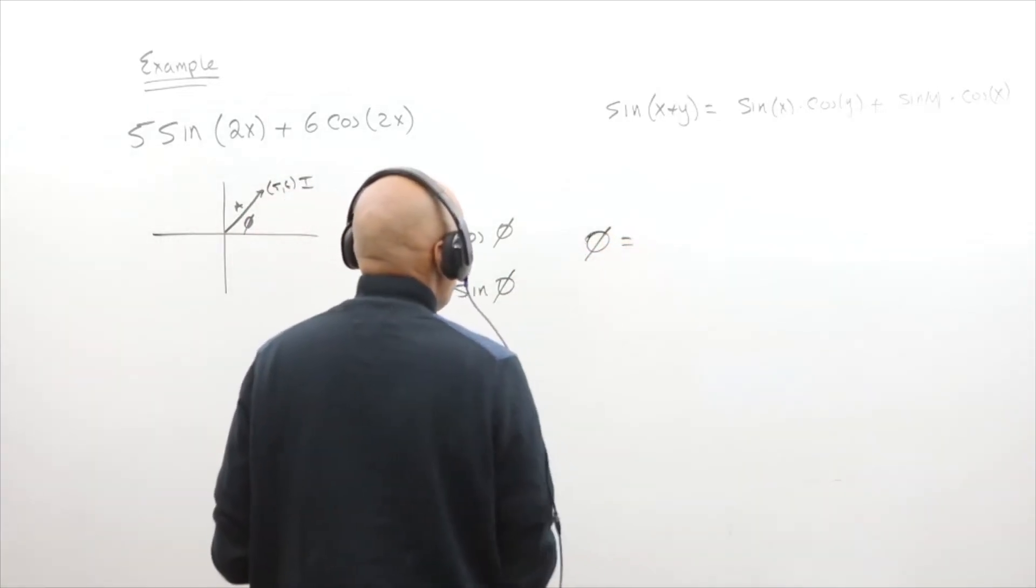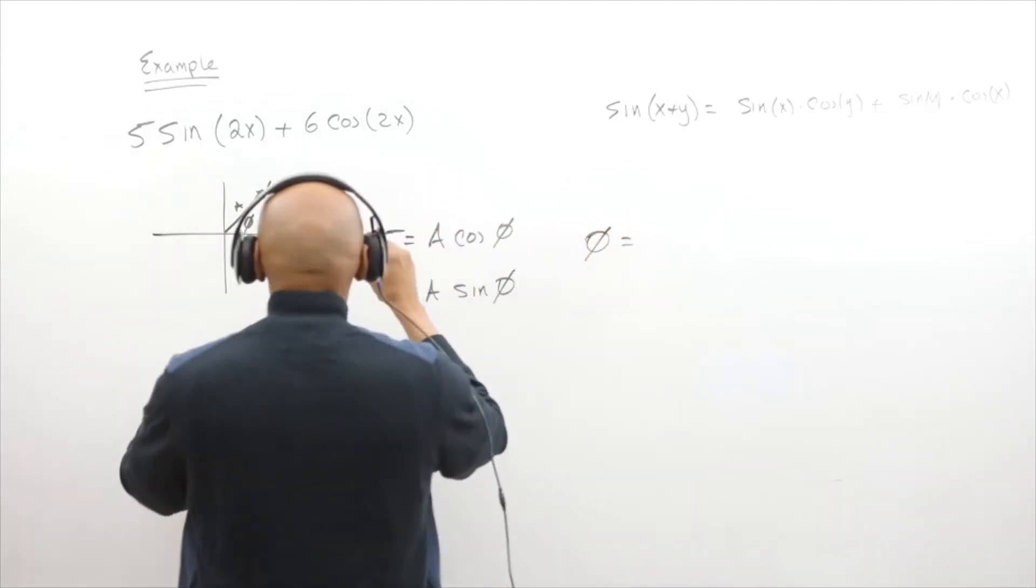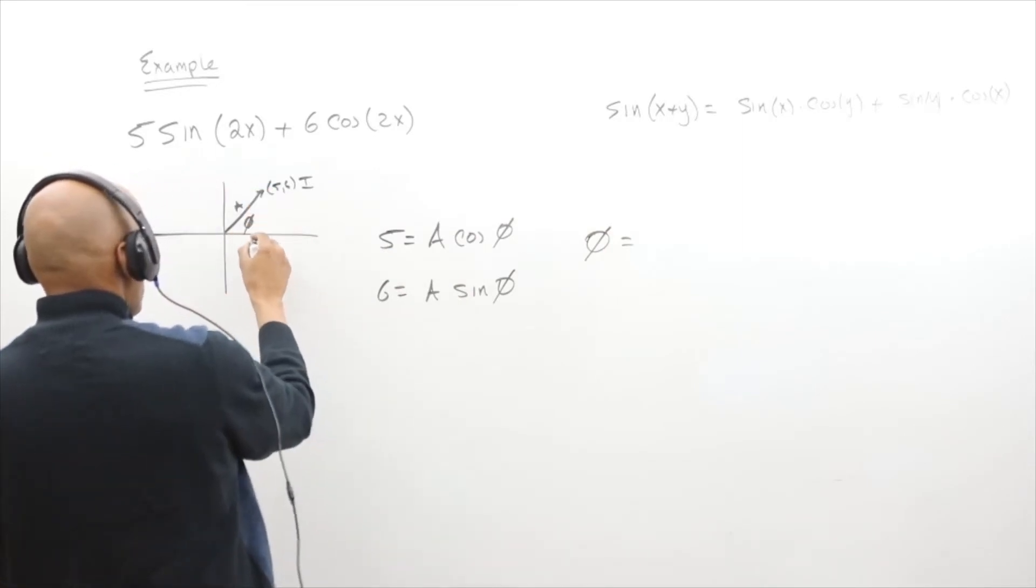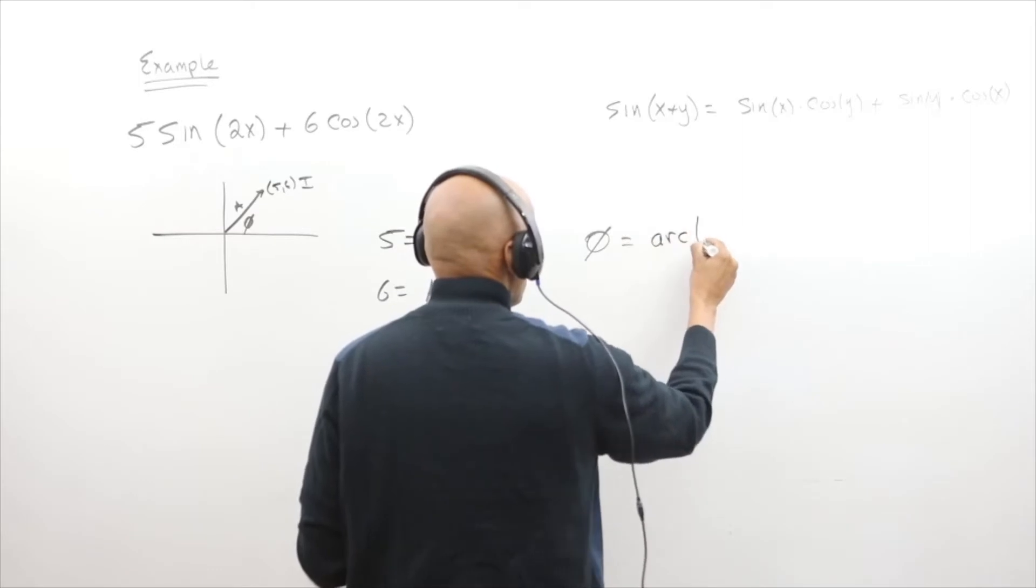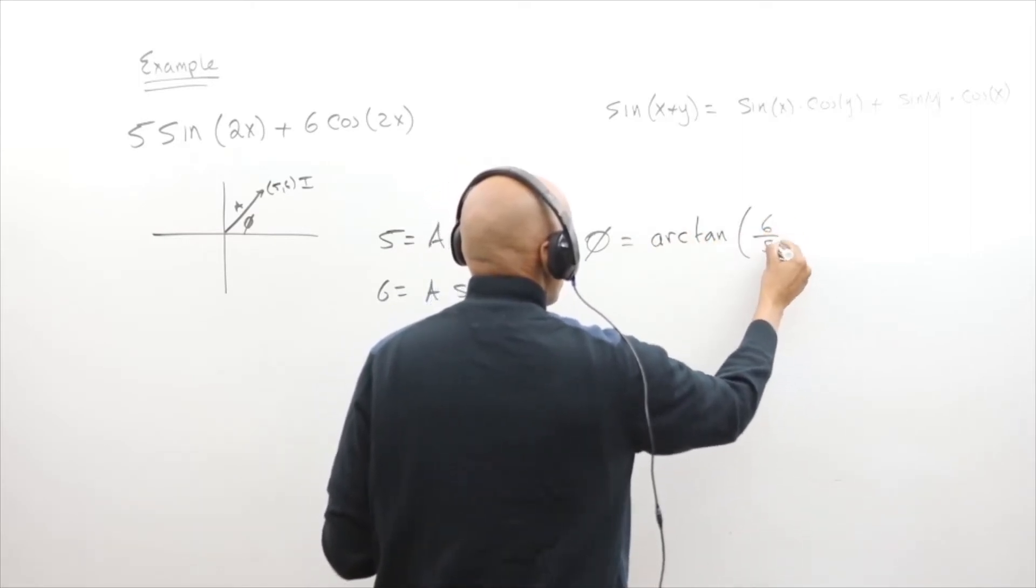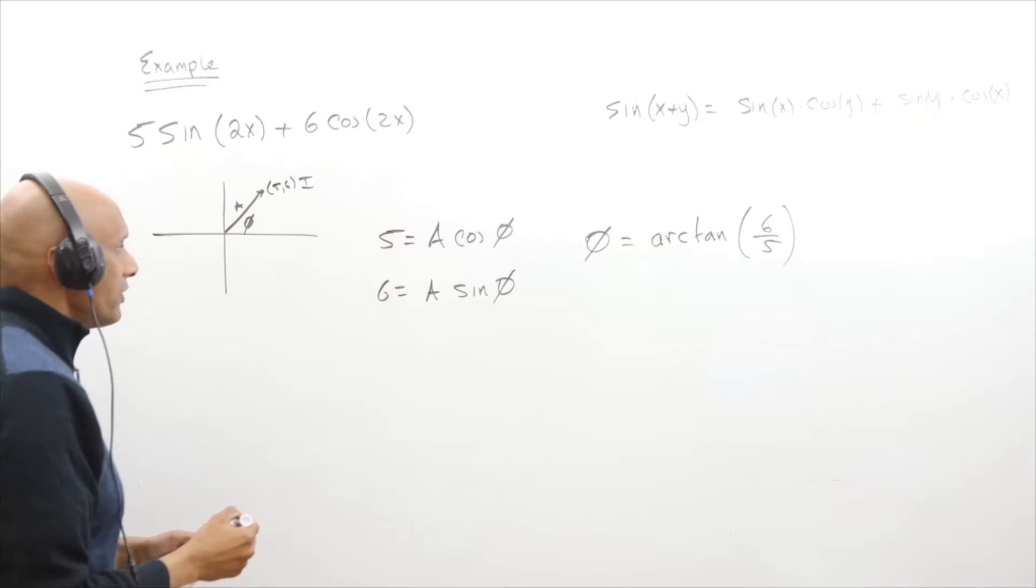I can calculate what phi is going to be. Phi is going to be equal to, well it's 5 this way on the horizontal and 6 up. So this is the arc tangent of 6 over 5. That's our phase angle.